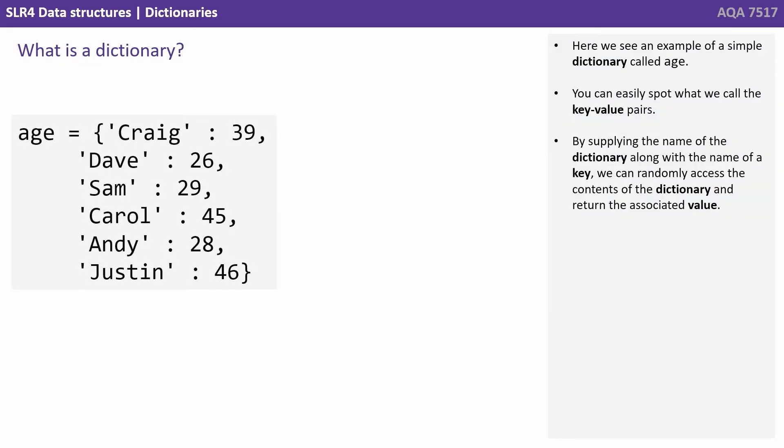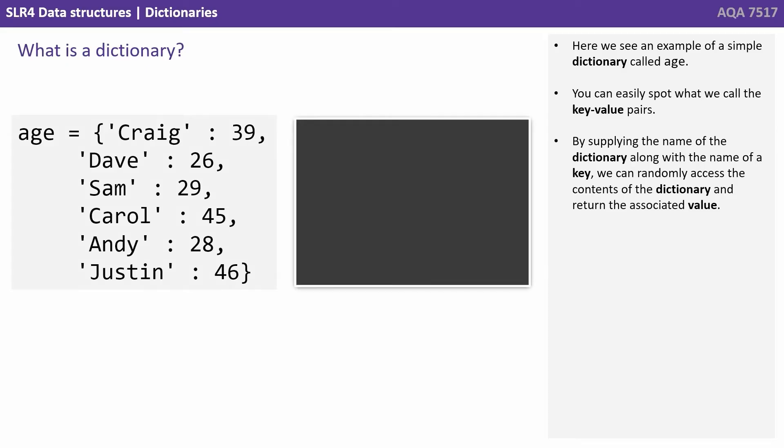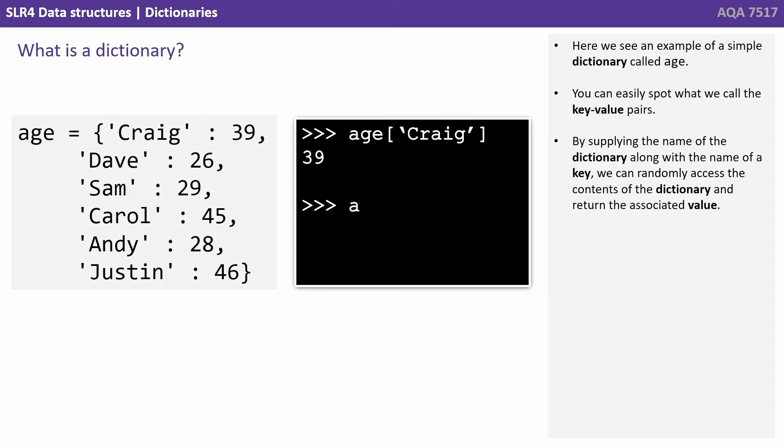Here we see an example of a simple dictionary called age. You can easily spot what we call the key-value pairs. By supplying the name of the dictionary along with the name of a key, we can randomly access the contents of the dictionary and return the associated value.